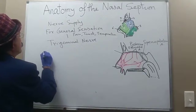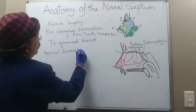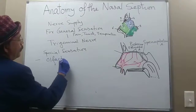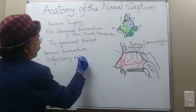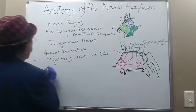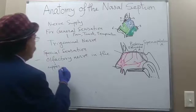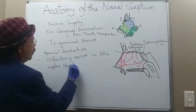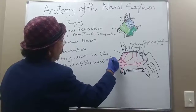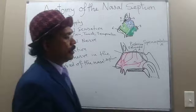For special olfactory sensation, it is carried by the olfactory nerve, which supplies the upper one-third of the nasal septum plus the roof of the nose.